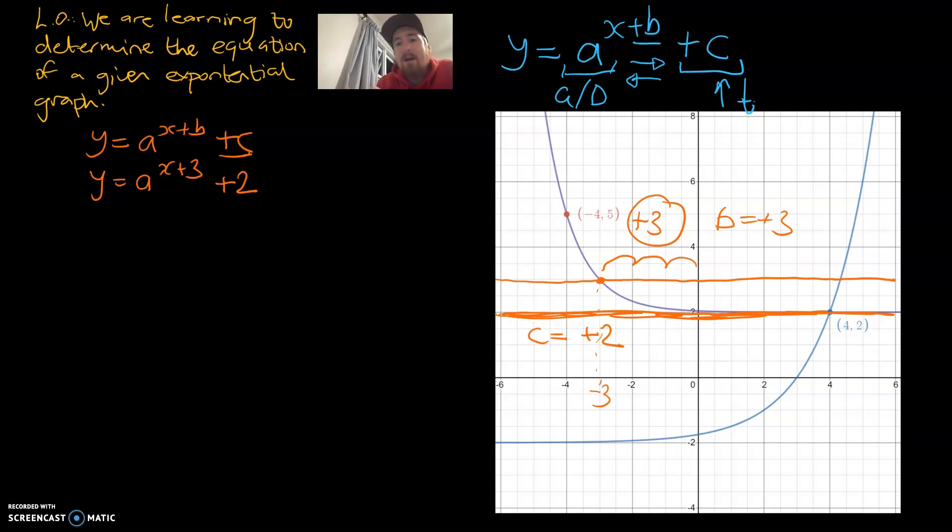We then are going to find our coordinate. So we've got our point nicely labeled. We've got negative four comma five and that means at point x is equal to negative four and y is equal to five. We're going to put both of those into our equation. So five is equal to a to the power of negative four plus three and we're going to add two to that.